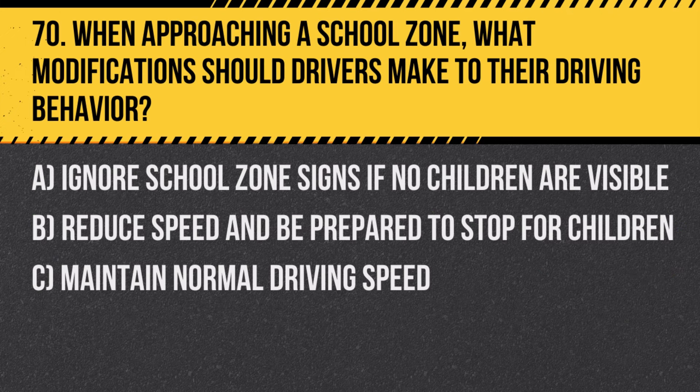Question 70: When approaching a school zone, what modifications should drivers make to their driving behavior? A. Ignore school zone signs if no children are visible. B. Reduce speed and be prepared to stop for children. C. Maintain normal driving speed. Answer: B. Reduce speed and be prepared to stop for children. It's important to be extra cautious in school zones for the safety of children.